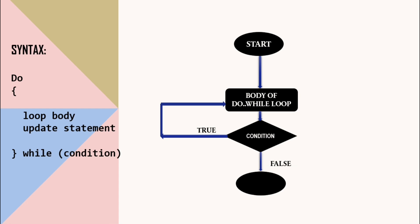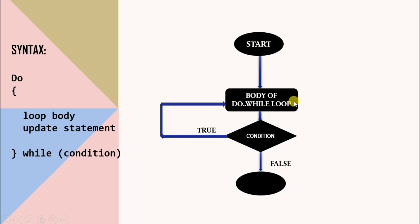Here is the flowchart. As you can see, first the body gets executed and after that the condition is checked. If the condition is true, the body will be executed again; otherwise the loop stops. So at least once this body gets executed, even if the condition is false.